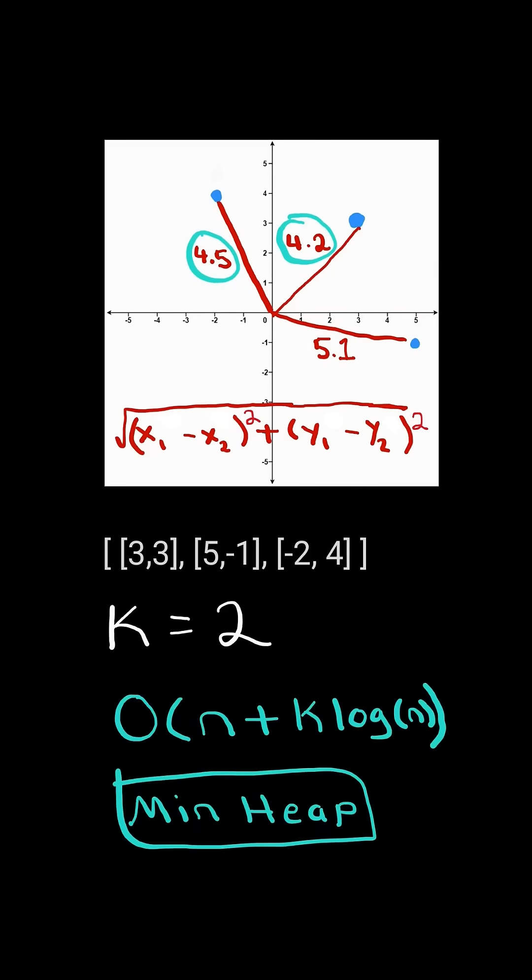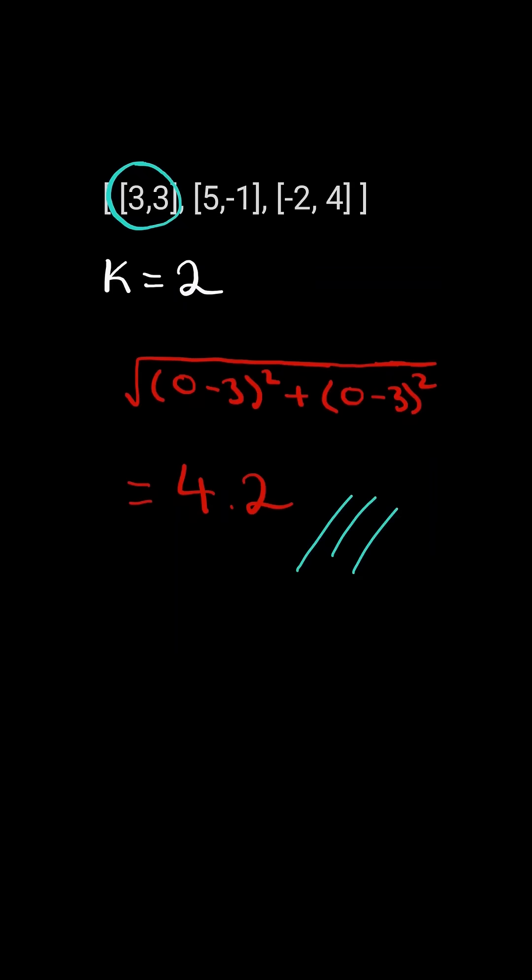We will solve this using a min heap. First, we iterate through the list and calculate the Euclidean distance between the point and the origin and create a node with the distance and the point.